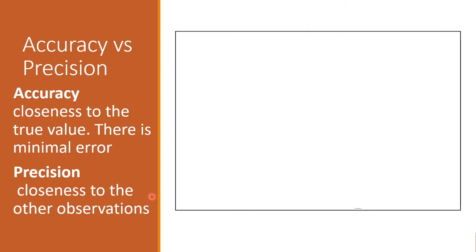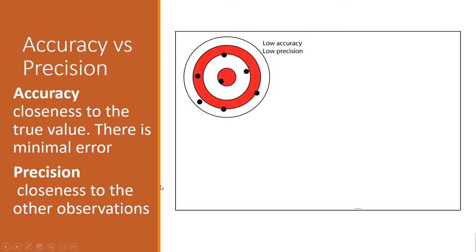To explain this further, we have these diagrams. Diagram number one: low accuracy, low precision. It is low precision because all these hits are not close to each other - they're far apart. It's low accuracy because when you take the average of these shots, they don't go near the bullseye.